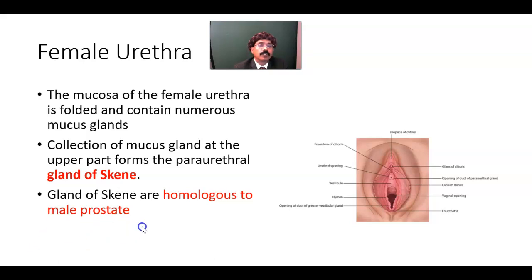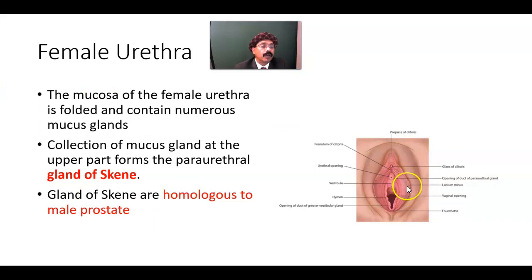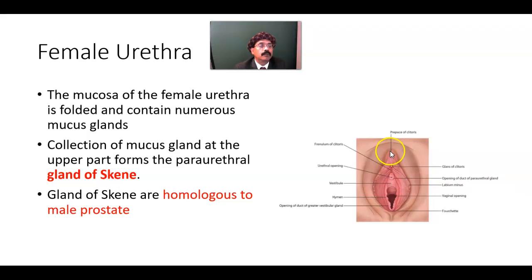Looking again at the anatomy: here is the labia majora, then the labia minora, and between the labia minora we have the vestibule. The clitoris is connected at its root to the lower part of the symphysis pubis as well as the rami of the pubis.